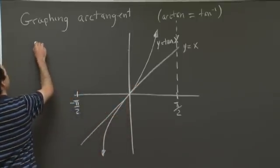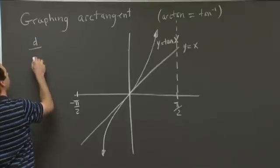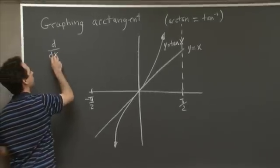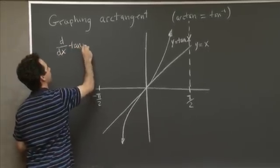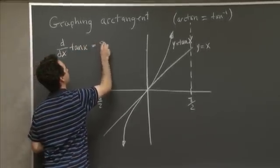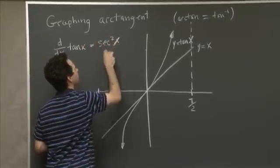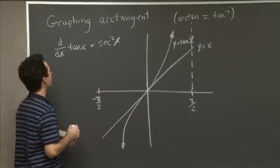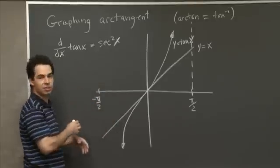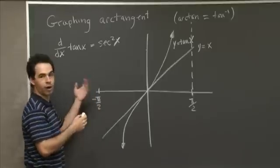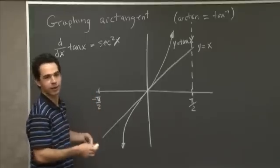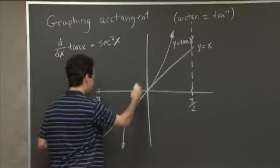So we saw in an earlier recitation that d over dx of tan x is equal to secant squared of x. And so the derivative at 0 is secant squared of 0, which is 1 over 1 squared, which is just 1. So the slope is 1.